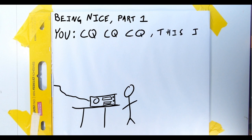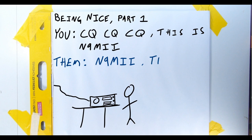CQ. CQ. CQ. This is November 9, Michael India India. Might do that a couple times. If someone hears me and wants to talk, they might respond with November 9, Michael India India, this is Kilo Golf 7, Foxtrot Zulu Hotel. All right, Becky's asleep. Otherwise, I'd have her do her part. But yeah, I am not waking her up for this. Sorry.